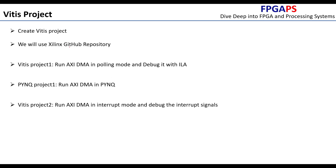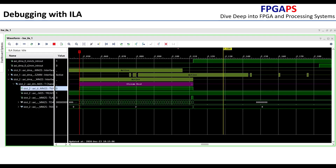In today's video we are going to create the Vitis project. We are going to use the Xilinx GitHub repository and grab two examples that already exist there. First, we are going to run the AXI DMA in polling mode. In the second project we will run the AXI DMA in interrupt mode, observe the T-last signal, and observe the two asserted interrupts from the AXI DMA.